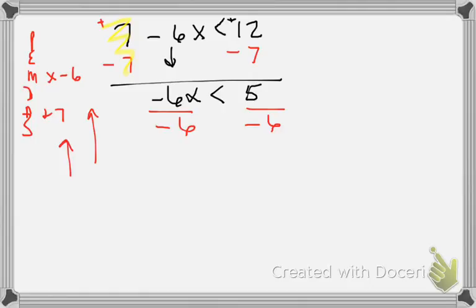Our variable is being multiplied by negative six, so the opposite is to divide both sides by negative six. This is that special situation: whenever I'm multiplying or dividing a negative number away from the variable, the negative six with the X becomes positive one, and one times X is X. This causes the inequality sign to flip — so instead of less than, it's now greater than. The number on the other side is negative five over six.